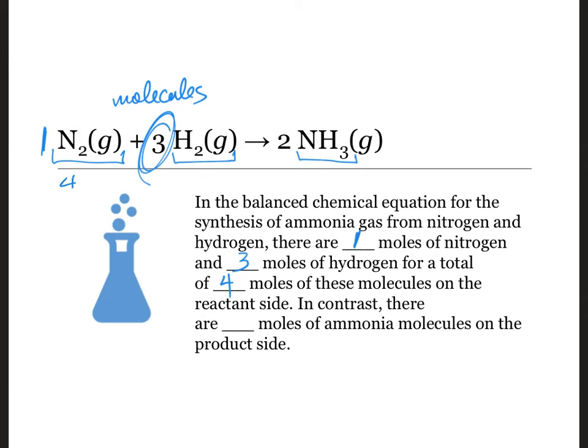So we have four moles of molecules. In contrast, there are only two moles of ammonia, and the idea here is that while we are conserving the number of atoms, the number of moles of gas phase reactants and products is different.